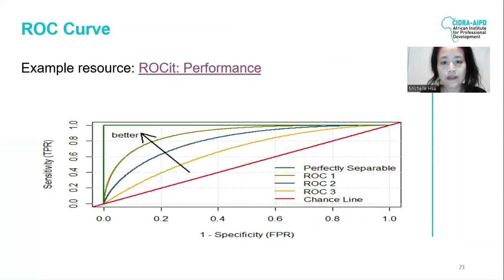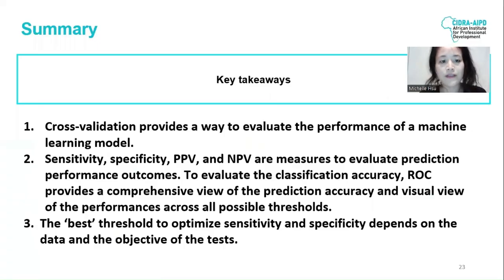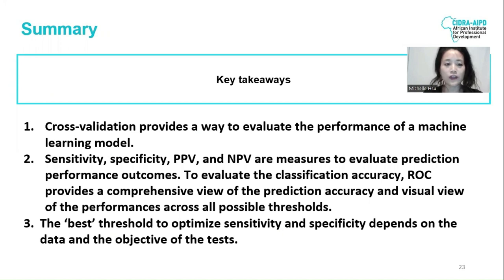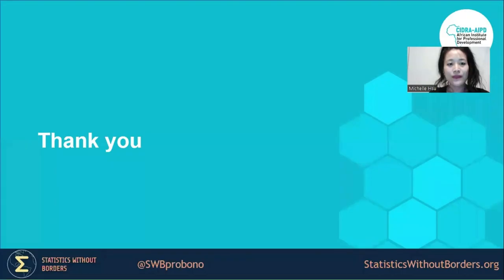To summarize today's class: cross-validation provides a way to evaluate the performance of a machine learning model. Sensitivity, specificity, PPV, and NPV are measures to evaluate prediction performance outcomes. ROC provides a comprehensive view of prediction accuracy and a visual representation of performance across all possible thresholds. The best threshold to optimize sensitivity and specificity depends on the data and the objective of the test. Thank you very much, and I hope you have a great day.